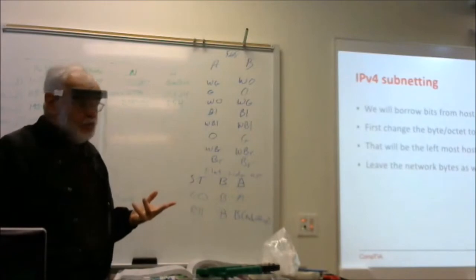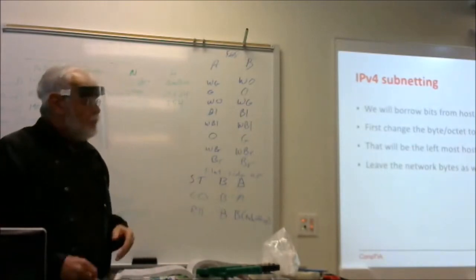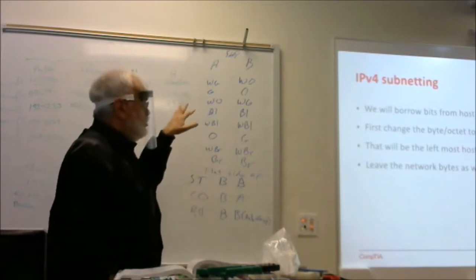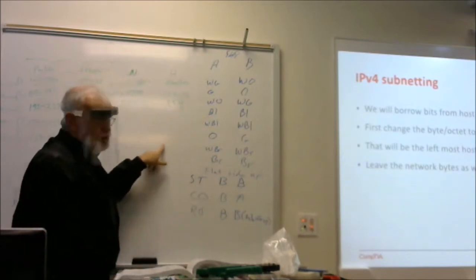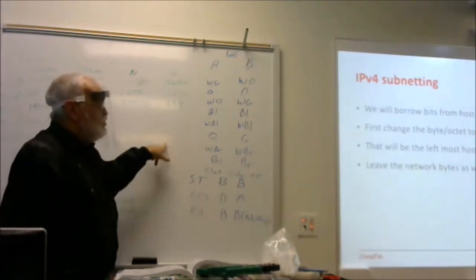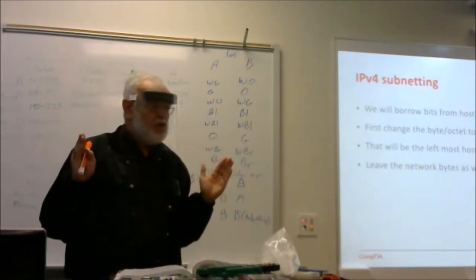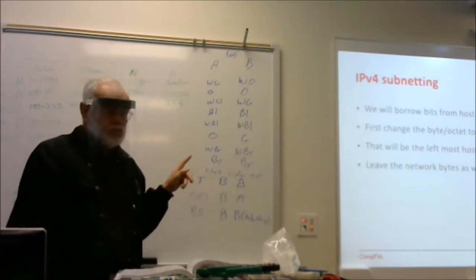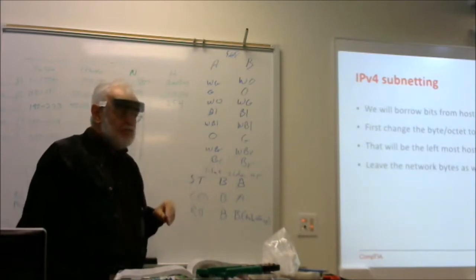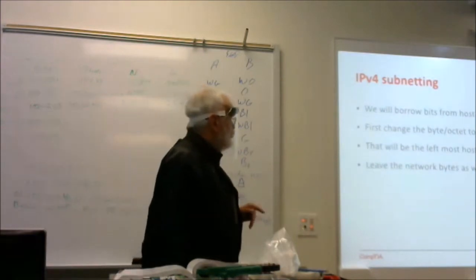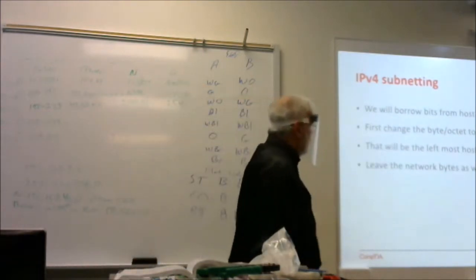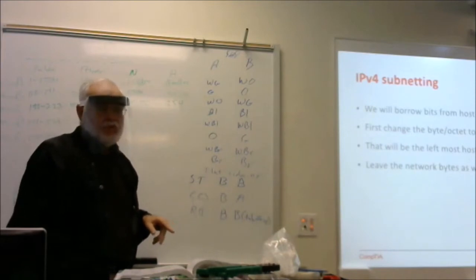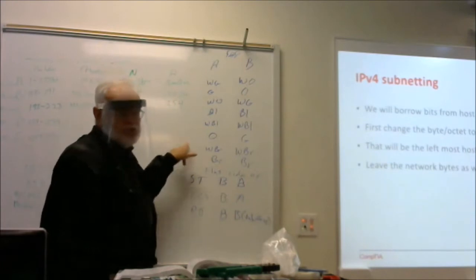So, we're doing IPv4 subnetting here. A couple of big things: we're borrowing bits. What we're going to do is take this octet that's reserved for host and borrow bits from it to create subnets and create smaller networks. We'll have fewer total devices on our network and a smaller number per subnet. To do this, we're going to change that byte or octet and express it in binary. We're going to work it from binary, so you know how many bits go into that one.